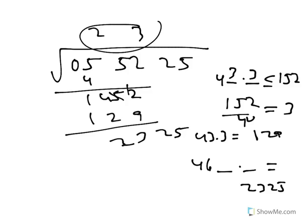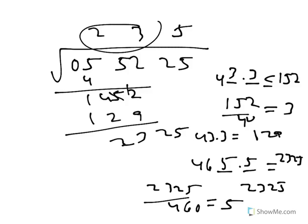To get an approximation for this, you can divide 2325 divided by 460 to get something around 5. The answer is either going to be 5 or less than 5, but if you try 5 in this case, it actually works out to 2325. So the answer to this question is 235.